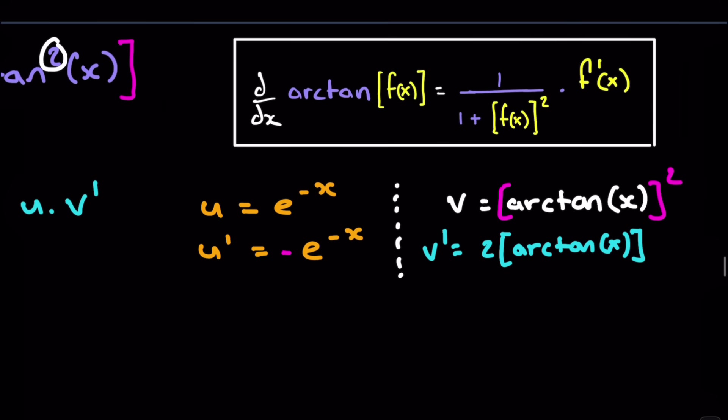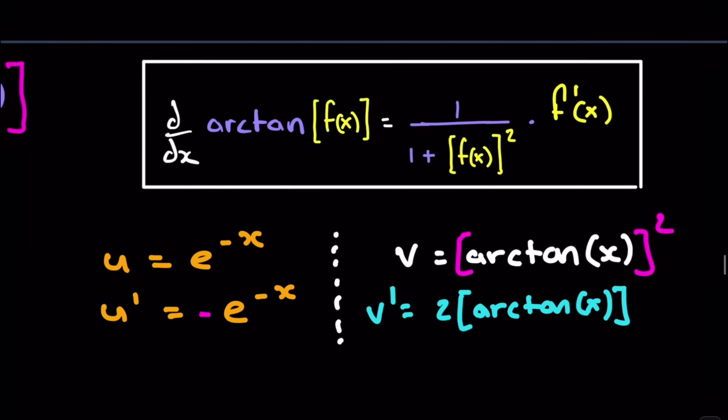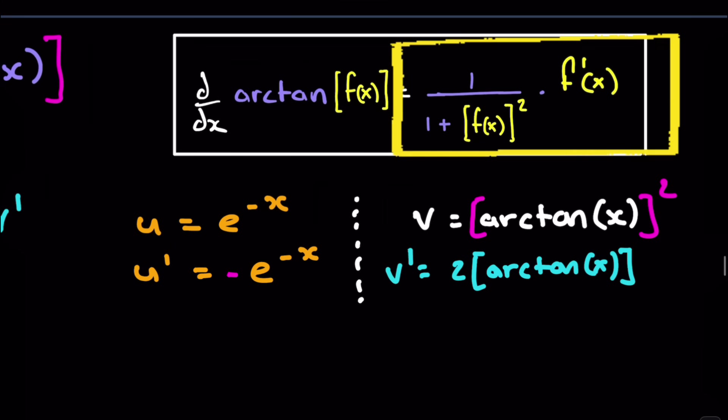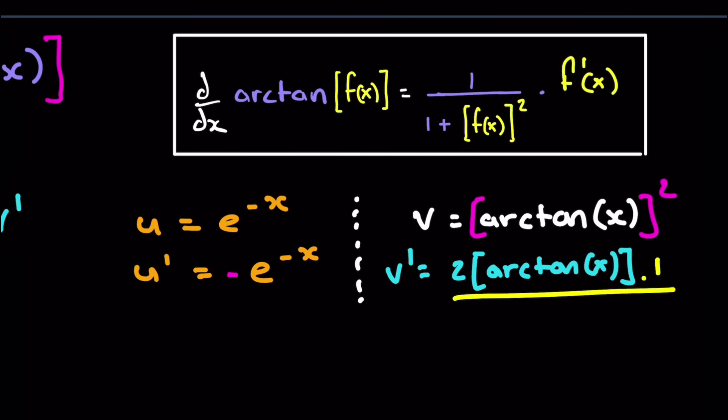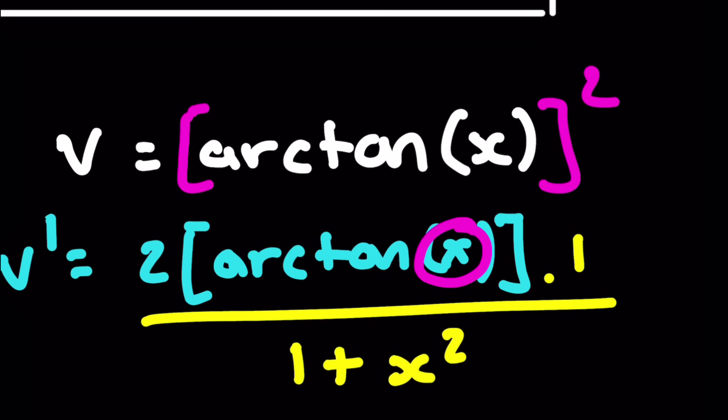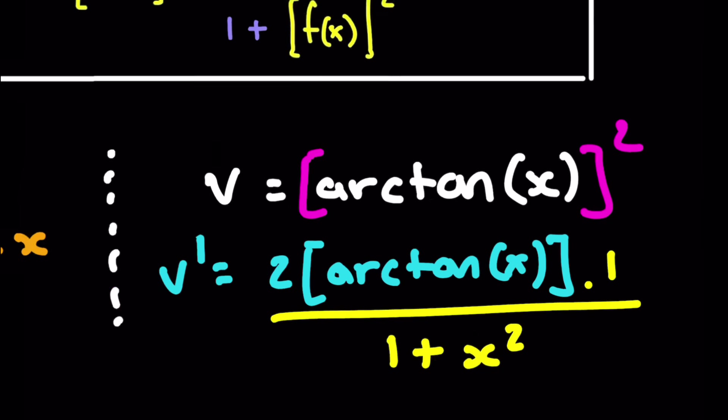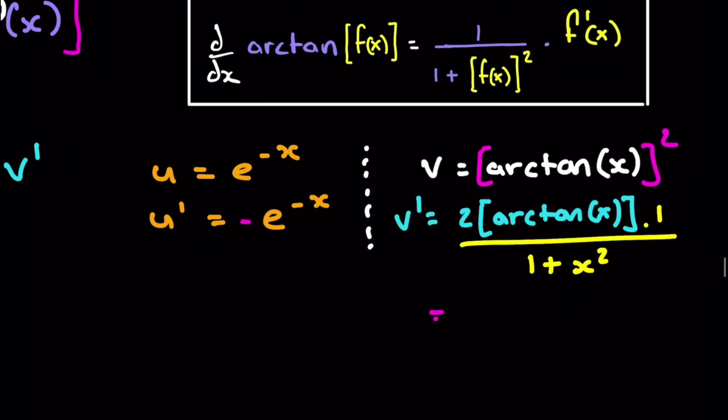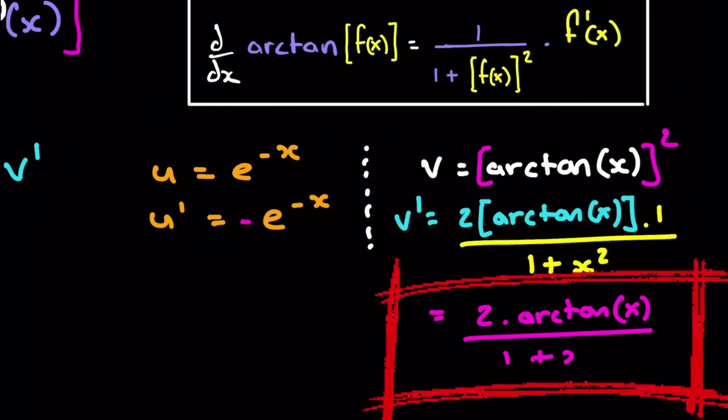So we're going to get times by 1. And this is all going to be over 1 plus f of x all squared. So now that's going to be, that's x squared. And then we're timesing by the derivative of the f of x. But the thing is, is the derivative of this x here is just 1. So we're just going to be timesing by 1 again. So we don't need to worry. So we're just going to tidy that up to be 2 arc tan x all over 1 plus x squared.